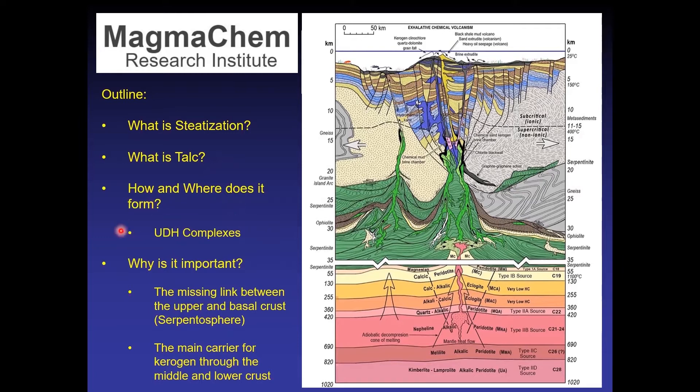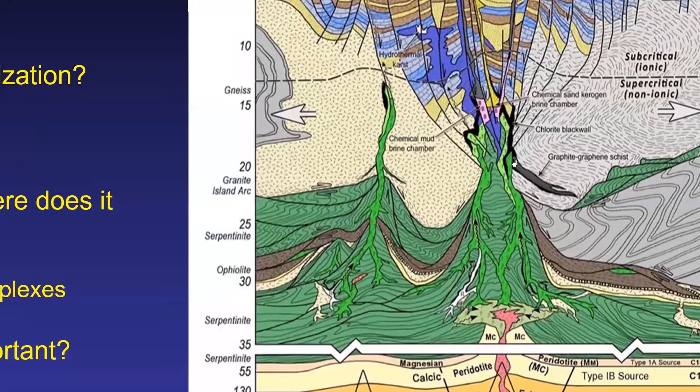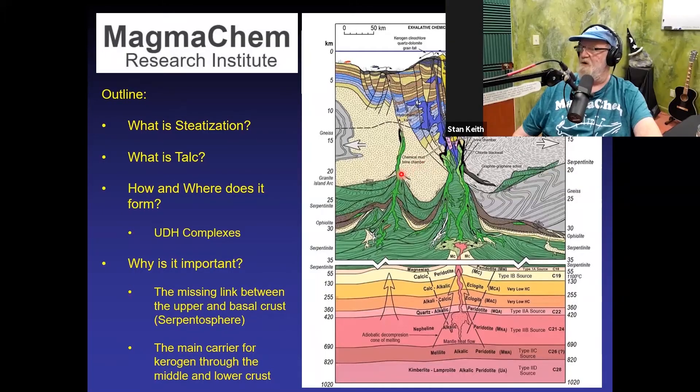How does it form? It forms as a product of dehydration of serpentinite along with carbonates. And it winds up being the main rock type in what we're referring to as UDH complexes. So that little talc stringer that you see and that whole diapyr that you see in that cartoon is in effect a UDH complex. You can see the really dark green, almost black material there. That's a chloride black wall that is a common alteration product around these serpentines as we'll see at Altamark.